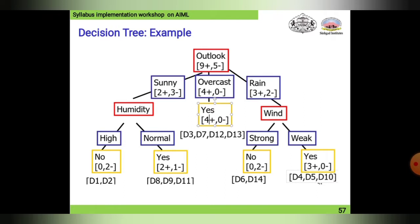If outlook is nine plus five, if sunny is two plus three, overcast is four plus zero, rain is three plus two. This is the overcast value. If it is humidity, if high humidity then no, if it is normal then yes. This is the actual data provided to make the decision. This is the mathematical formulation.